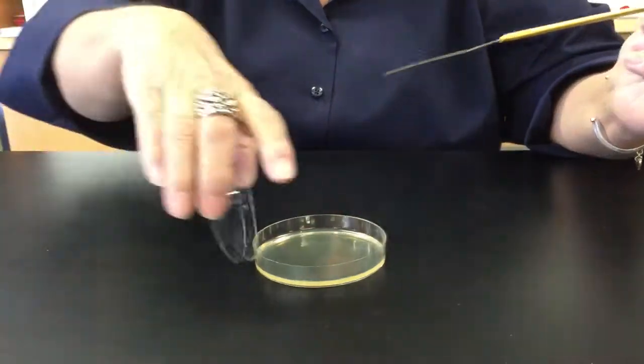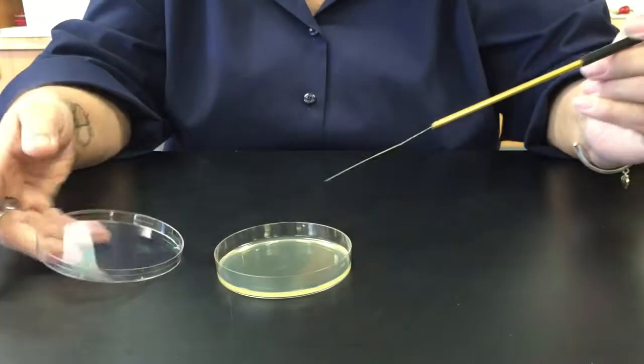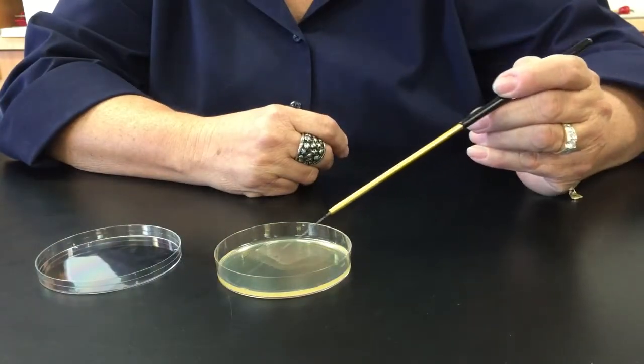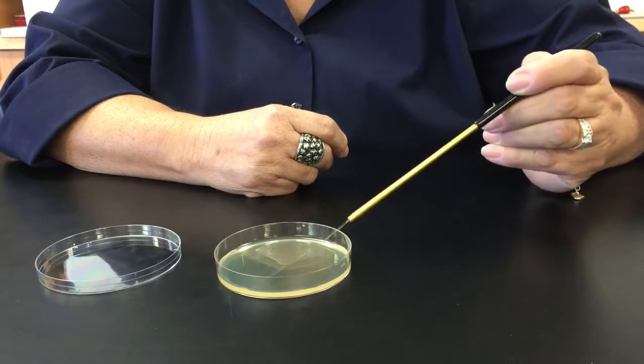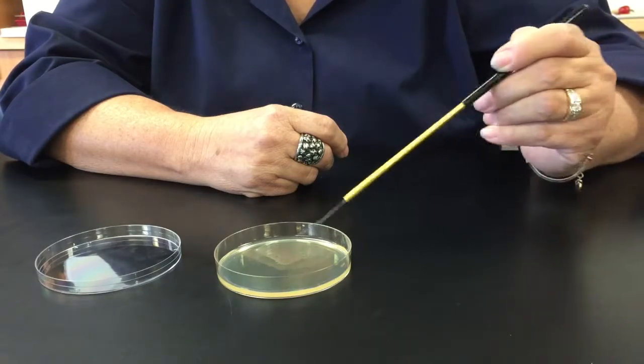And then I would close the lid, give the plate a quarter turn, and then drag a little of the material from the first into the second quadrant. Make as many passes on the surface of the agar as possible.